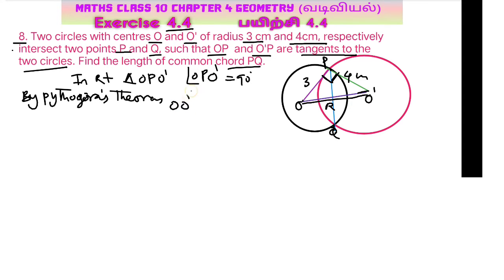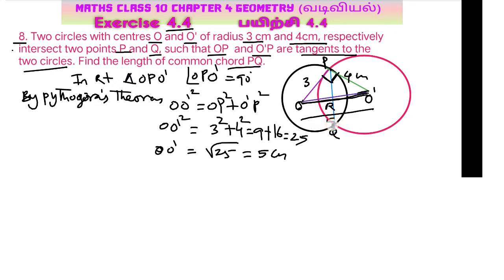OO' square equals OP square plus O'P square. So OP square plus O'P square, that is 9 plus 16, that is equal to 25. Then OO' equals square root of 25, that is 5 cm.